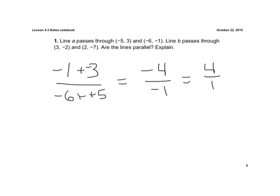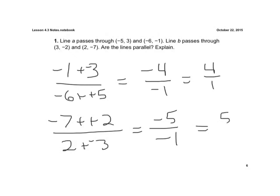Line B passes through these points. So we have negative 7. Subtract our Y-coordinates. Over 2 minus 3. Keep, change, change. Keep, change, change. Equals negative 5. Oh, these are not the same. So are they parallel? The slopes are different? No, not parallel. They have to have the same slope to be parallel.